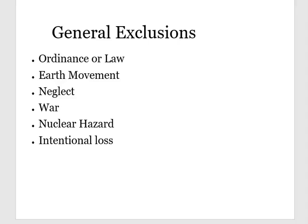General exclusions include ordinance or law, earth movement, neglect, war, nuclear hazard, and intentional loss. These exclusions mean that if there was damage due to a covered peril, but it was essentially because of war or neglect, it wouldn't be covered. Earth movement — usually an earthquake — is not covered. Nuclear hazard damage is not covered, and if the loss was intentional or you weren't taking care of the property, it would not be covered.